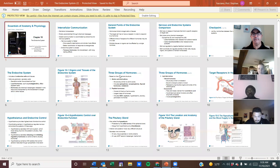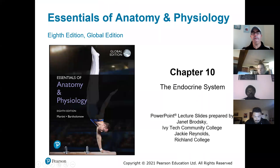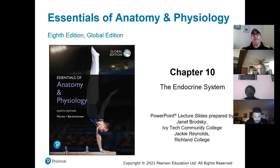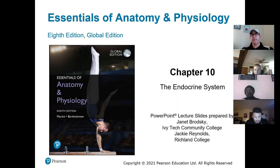Chapter 10: the endocrine system. We usually study the endocrine system with the nervous system because it's communication. The nervous system provides really fast communication from one part of your body to another. The endocrine system also communicates across your body but much slower, though the signal it produces persists for a longer amount of time.